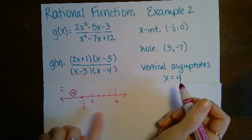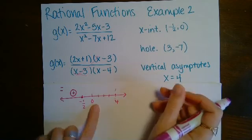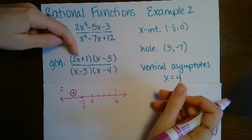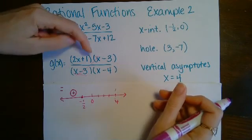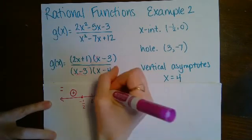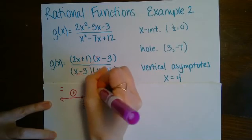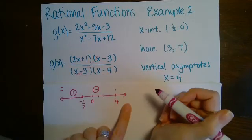For a number between negative one-half and four, we use zero. Two times zero plus one is positive, and zero minus four is negative. A positive divided by a negative is negative.